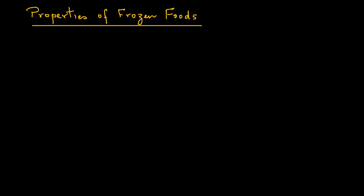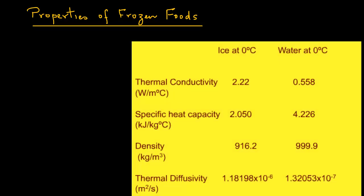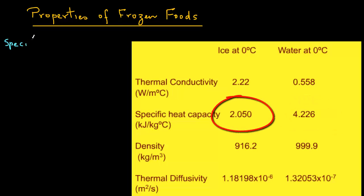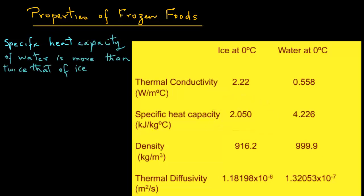Before we describe how food properties change during freezing, it is instructive to look at some discrete values of properties of water and ice, as shown here in this table. We can observe that the specific heat capacity of water, which is 4.226 kJ per kg degree Celsius, is more than twice that of ice, which is 2.05 kJ per kg Celsius.